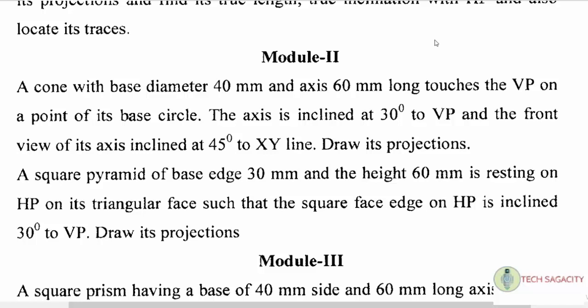Next, first question. A cone with base diameter 40 mm and axis 60 mm long touches the VP on a point of its base circle. The axis is inclined at 30 degrees to VP and the front view of its axis inclined at 45 degrees to XY line. Draw its projections.